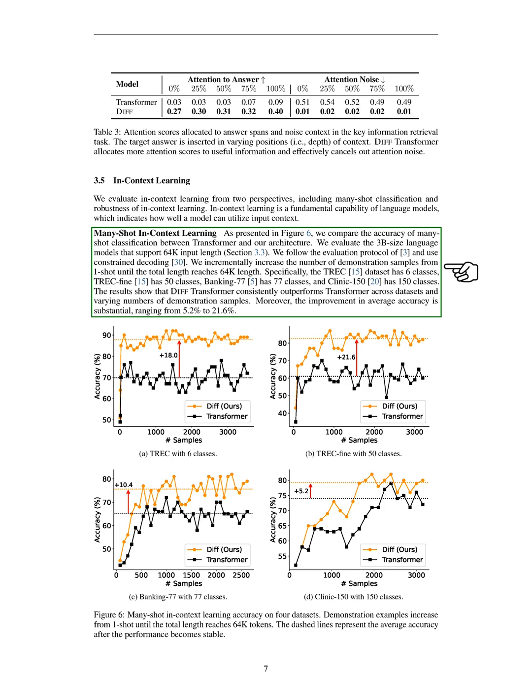The datasets we use include TREC with 6 classes, TREC Fine with 50 classes, BANKING 77 with 77 classes, and CLINIC 150 with 150 classes. Our results demonstrate that the DIFF transformer consistently outperforms the standard transformer across different datasets and numbers of demonstration samples, with average accuracy improvements ranging from 5.2% to 21.6%.